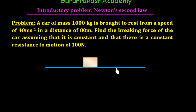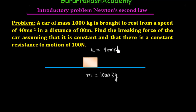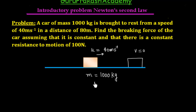The next problem is also related to Newton's Second Law. A car of mass 1000 kg is brought to rest from an initial speed of 40 m/s. The car travels a distance of 80 meters before coming to rest, so the final velocity is zero.